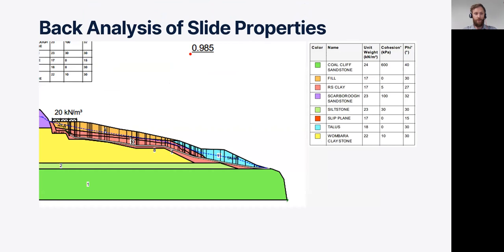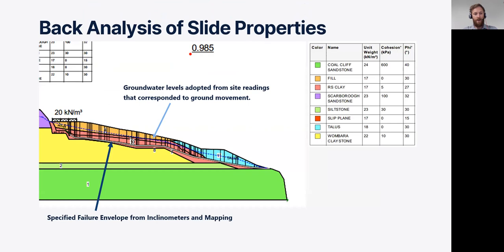Using the data from site and the desktop review, we started to build our Slope W model. We input the groundwater levels from site readings and from the information supplied by the client. We specified a failure plane using the inclinometer data that was available and we also used some of our inputs from our site inspection for the headscarp at the top of the slope and the exit at the toe of the slope. The back analysis was set up to target a factor of safety of just below one. We were then able to determine residual soil strength parameters for the materials that were observed displacing in the landslide.